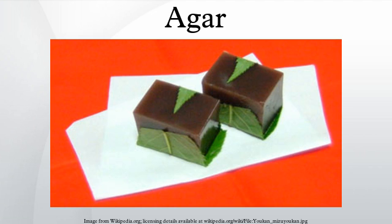The gelling agent in agar is an unbranched polysaccharide obtained from the cell walls of some species of red algae, primarily from the genera Gelidium and Gracilaria. For commercial purposes, it is derived primarily from Gelidium amansia. In chemical terms, agar is a polymer made up of subunits of the sugar galactose.